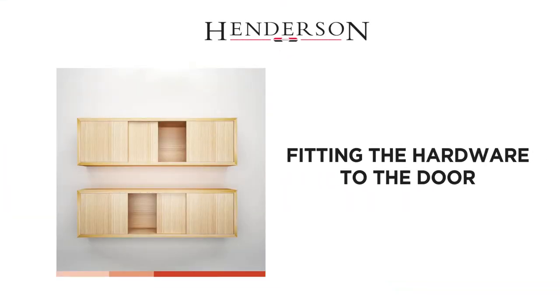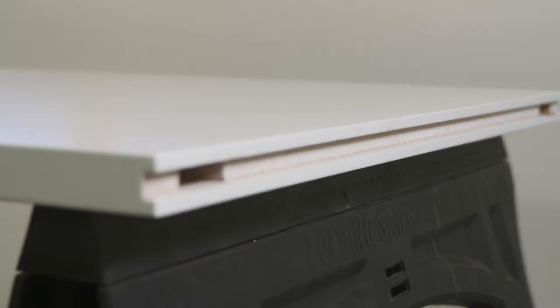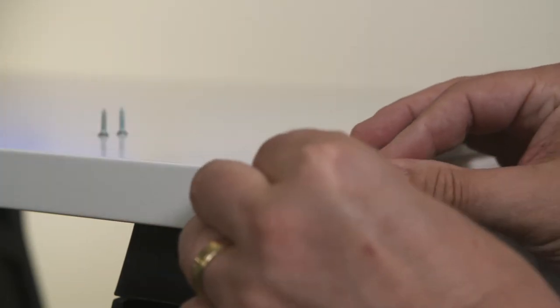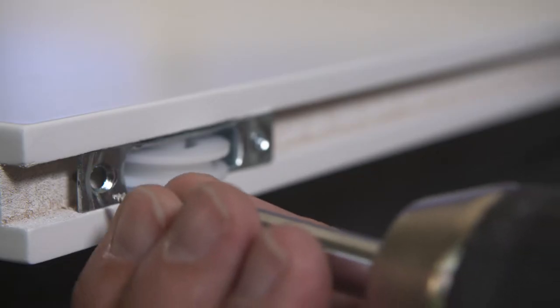Fitting the hardware to the door. Place the bottom rollers into the pre-routed detail at the bottom of the door and screw into place.